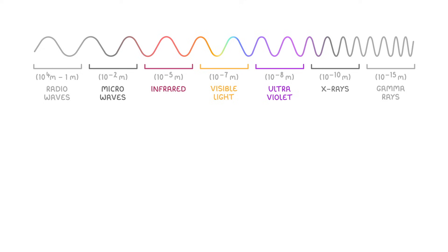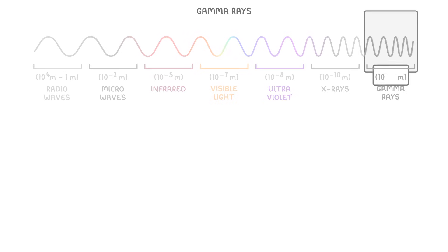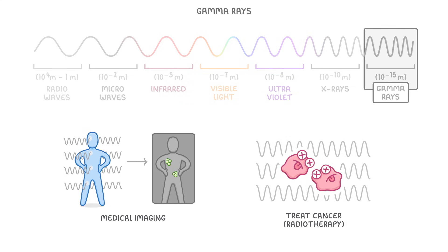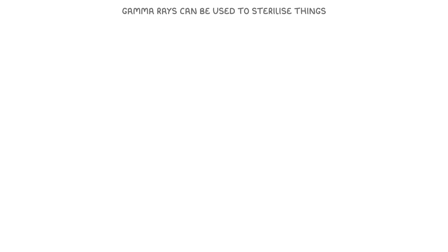We cover in another video that gamma rays can be used in medical imaging and used to treat cancer in a process known as radiotherapy. In this video, though, we're going to concentrate on how gamma rays can be used to sterilize things, and in particular medical equipment and food.